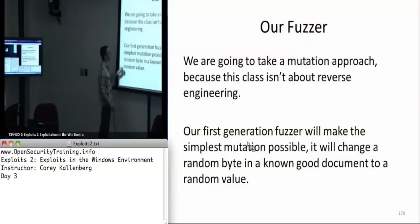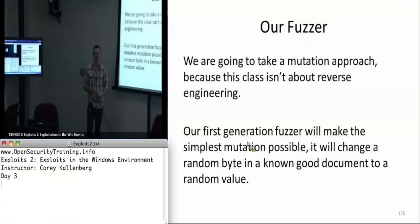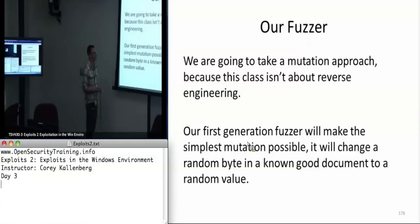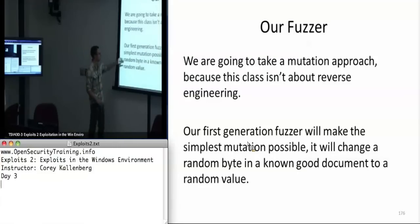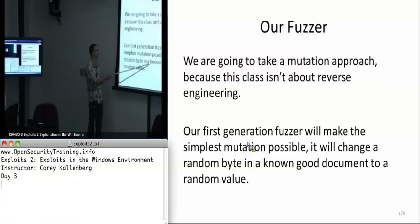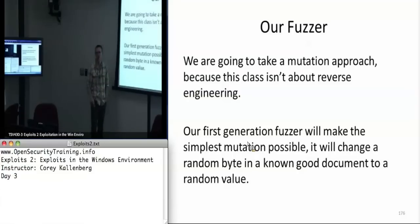For our purposes, we're going to be using a mutational approach because it's easier, and this class isn't about reverse engineering. I don't want you guys to have to use IDA Pro for six hours to figure out what Corey's crappy document specification is. Instead, I'll be providing you with a sample of known good CDF files and we'll be fuzzing those. Our data mutation will be changing a random byte in the CDF file to a random value — one byte in the file changes to one random value. I'll give you the opportunity to change those rules and mutate the data however you want, but that'll be our basic framework.